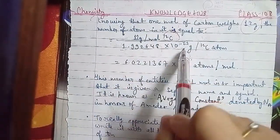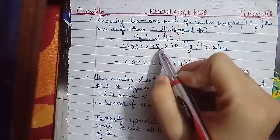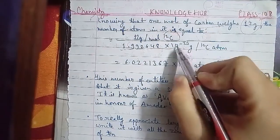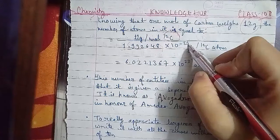When we solve this, we divide: 12 grams divided by 1.992648 × 10⁻²³ grams gives us the number of atoms. Solving this — you can also use a calculator — the answer works out to 6.02281367 × 10²³ atoms per mole.